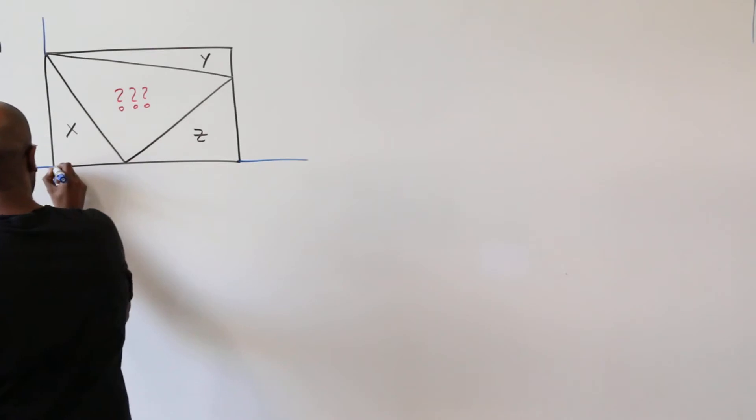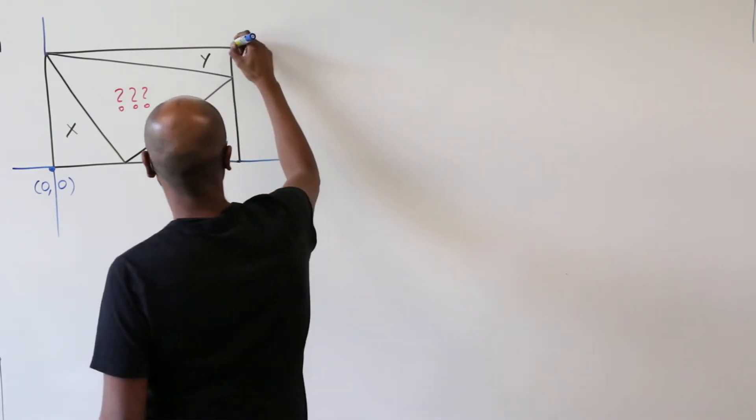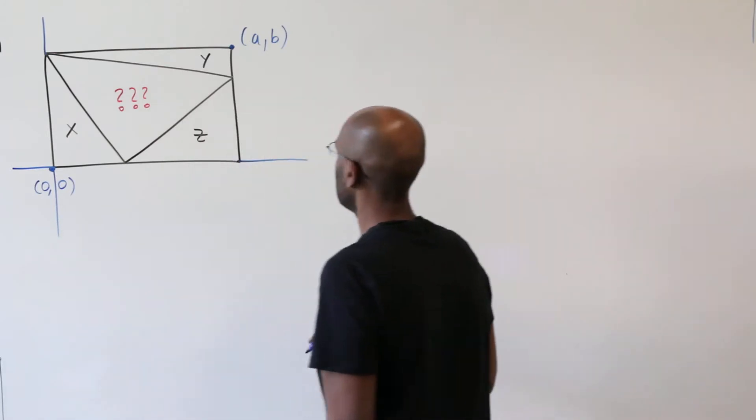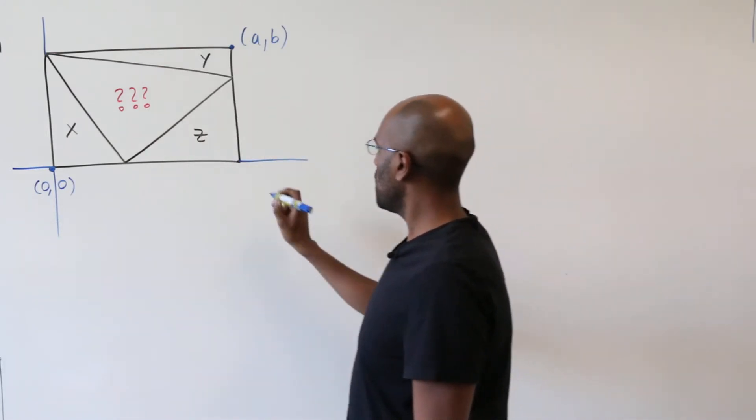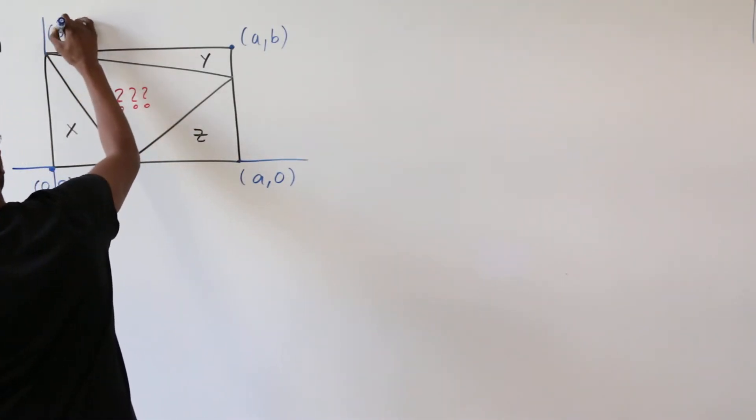Okay, so we'll place this so that this coordinate here is the origin. We don't know the length and the width of this rectangle so we'll make guesses by assigning variables to both. We'll call the coordinate right here (a,b) and subsequently this coordinate here is (a,0) and this coordinate up here is (0,b).